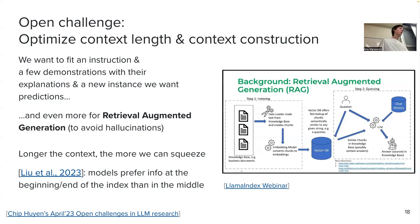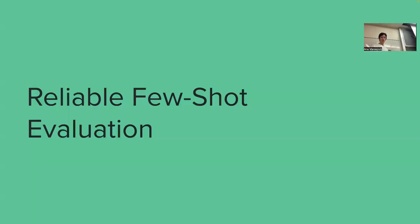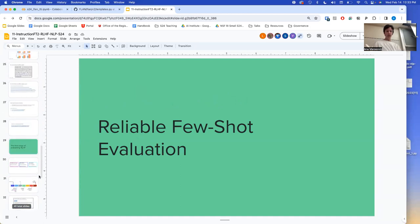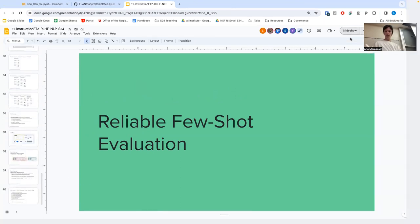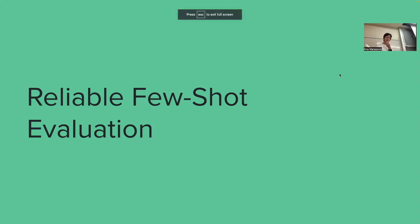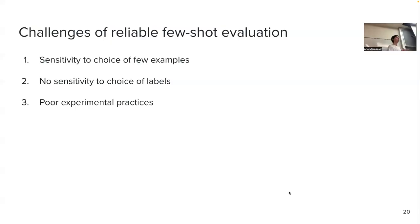There is so much to talk about here — it could be a whole course on its own. I already touched on the topic of reliable few-shot evaluation. There is sensitivity to the choice of few examples, no sensitivity to choice of labels, and then there are poor experimental practices.